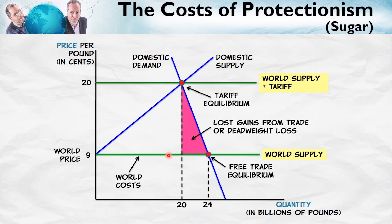First, the lost gains from trade. The demand curve can be read as the willingness to pay for sugar by domestic consumers. The world supply curve can be read as the cost of producing sugar — the price at which world suppliers are willing to supply the sugar. So there are lots of gains from trade here.